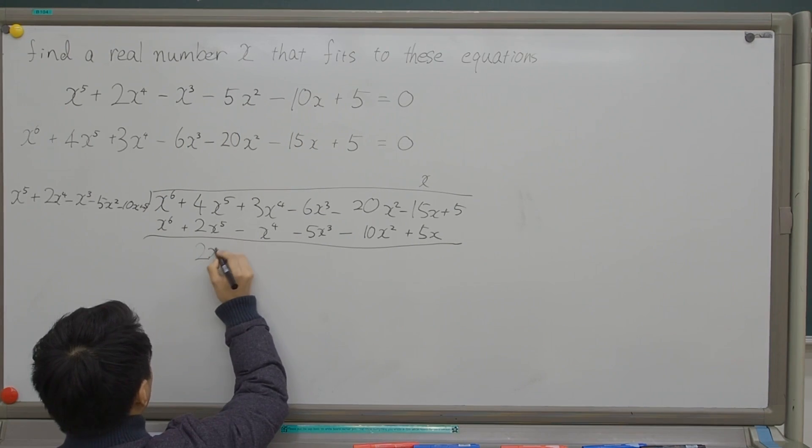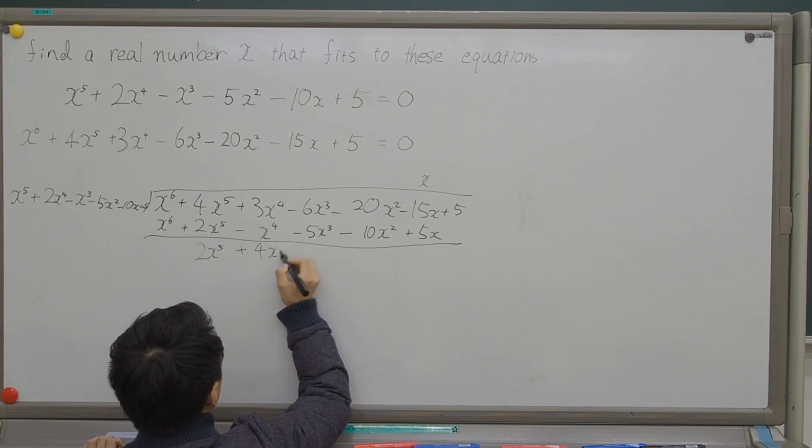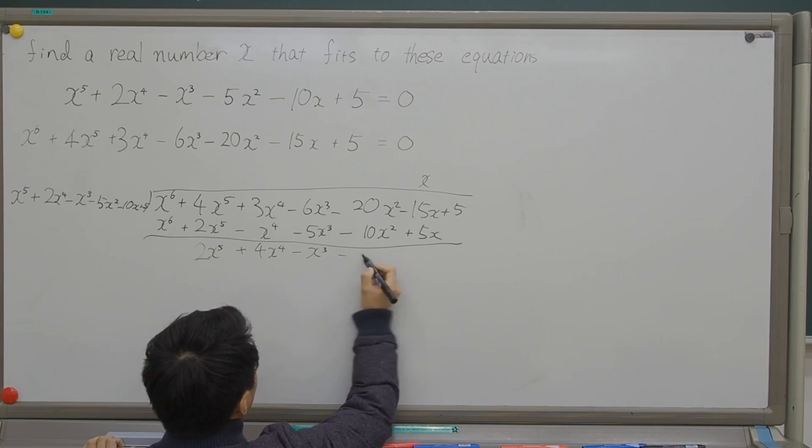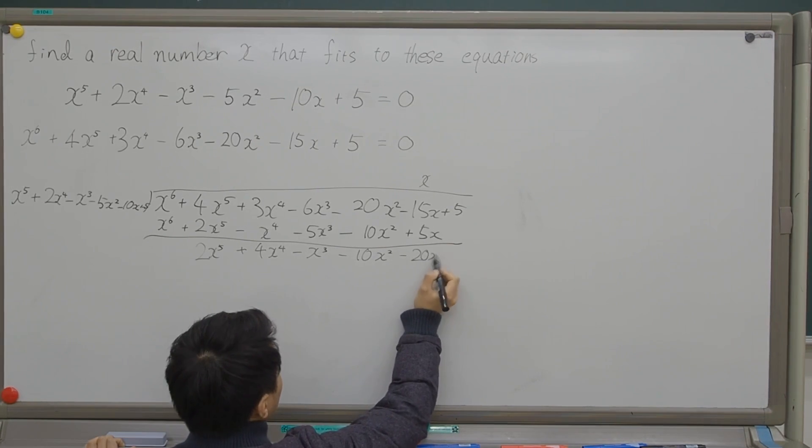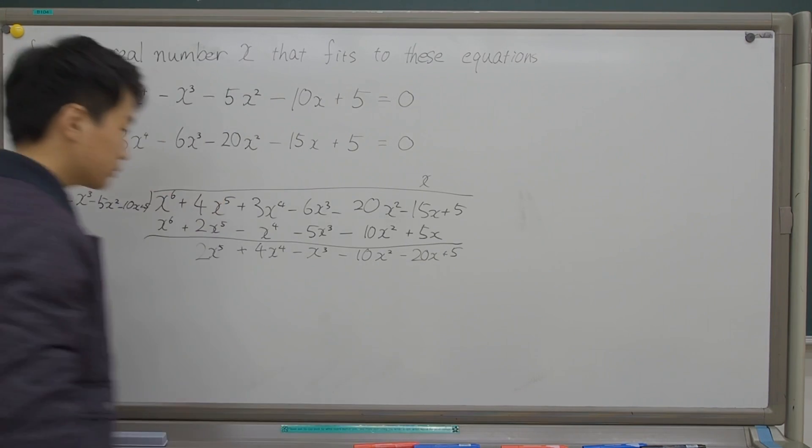So, to the power of 5, what we left is plus 4x^4 minus x^3 minus 10x^2 minus 20x. And you just simply put it down here, plus 5, plus 5.